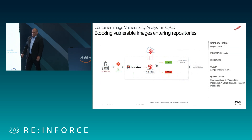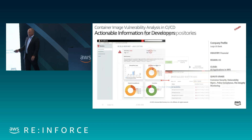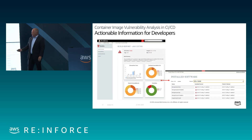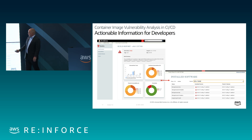We also offer a Jenkins plugin — yet another example of utilizing the tool sets that developers are already using, plugging into those tool sets to use logic gates to pass or fail based on vulnerability findings. Here's a snapshot of our Jenkins dashboard, which developers can use to get an understanding of vulnerabilities in their environment as well as vulnerabilities from their code.